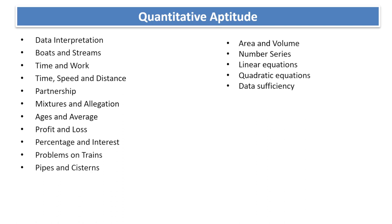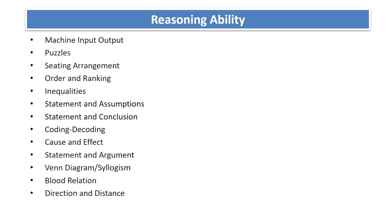For quantitative aptitude: data interpretation, boats and streams, time and work, time speed and distance, partnerships, mixtures and allegations, ages and averages, profit and loss — data interpretation is most important. Also percentage and interest, problems based on trains, pipes and cisterns, area and volume, number series, linear equations, quadratic equations and data sufficiency. Geometry is not included.